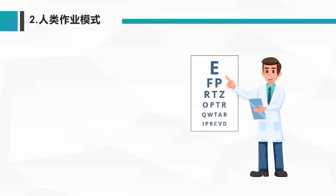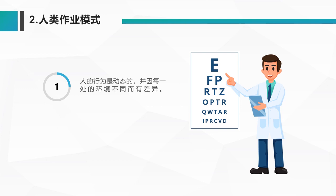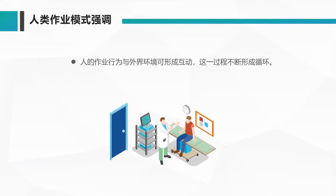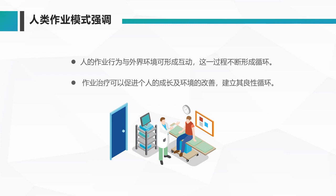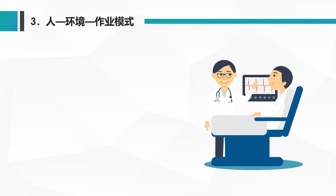第二种，人类作业模式：主要从人的行为和作业形态来看。人的行为是动态的，每处环境不同而有不同差异；作业对个人的自我组织非常重要且影响很大。人类作业模式强调人的作业行为和外界环境可形成互动，而这一过程要不断形成循环。作业治疗就是促进人的成长和环境的改善，建立一个良性的循环环境。